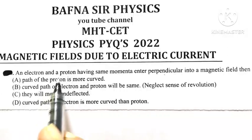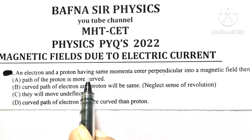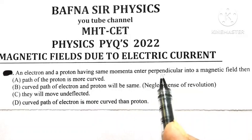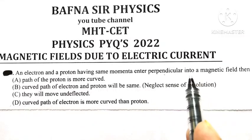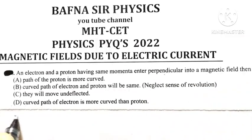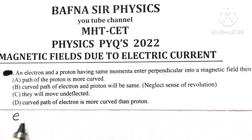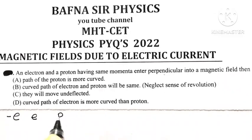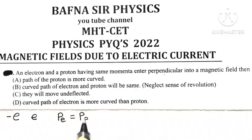An electron and proton having the same momenta enter perpendicular into a magnetic field. The charge on the electron is minus e, and the charge on the proton is e. They are having the same momentum — the momentum of the electron is equal to the momentum of the proton.